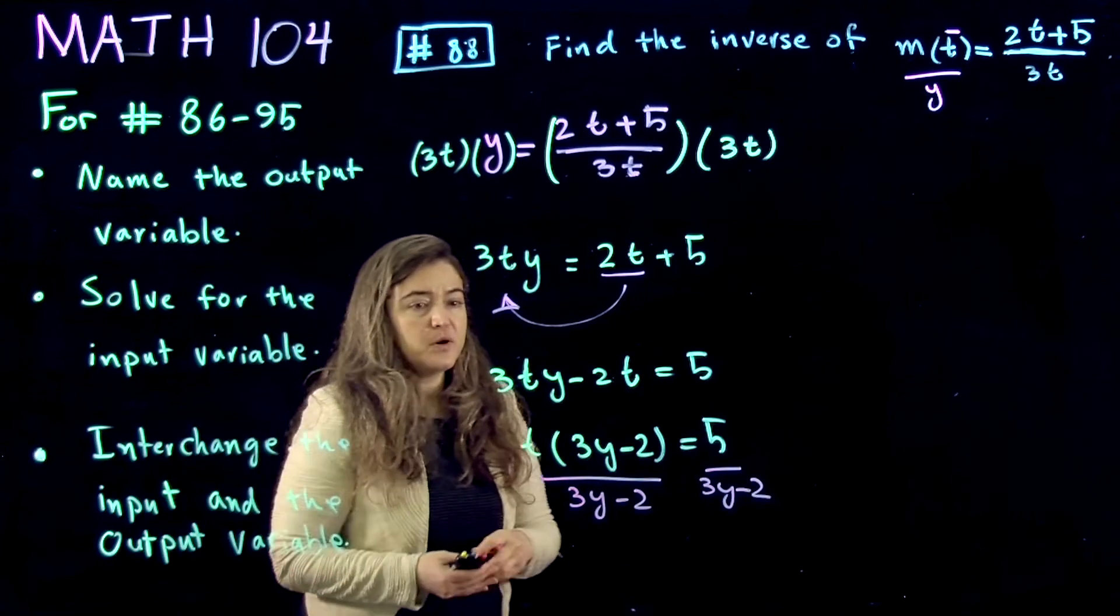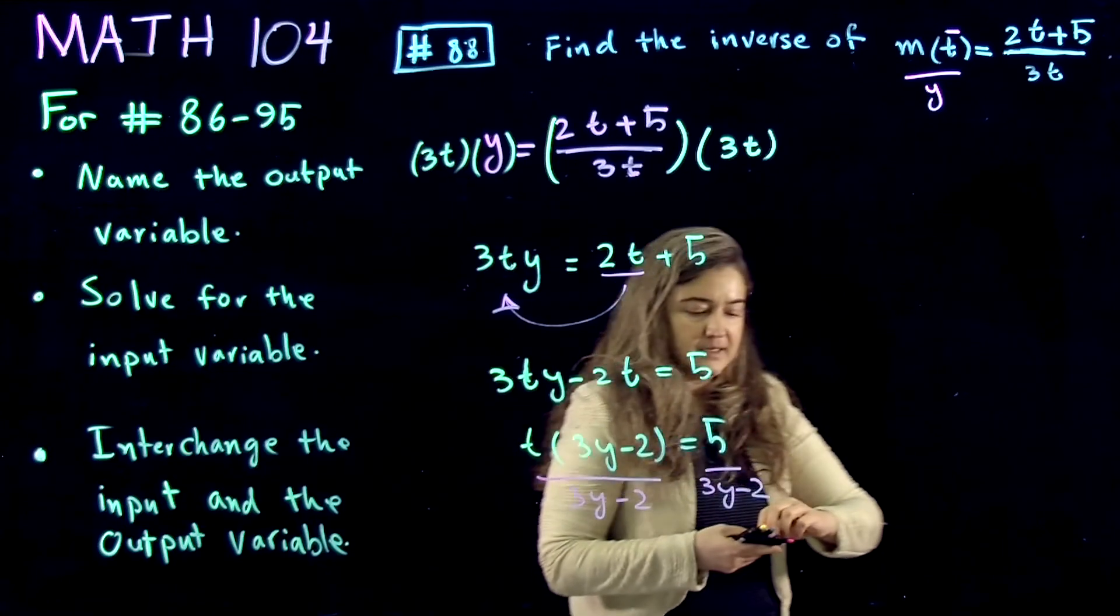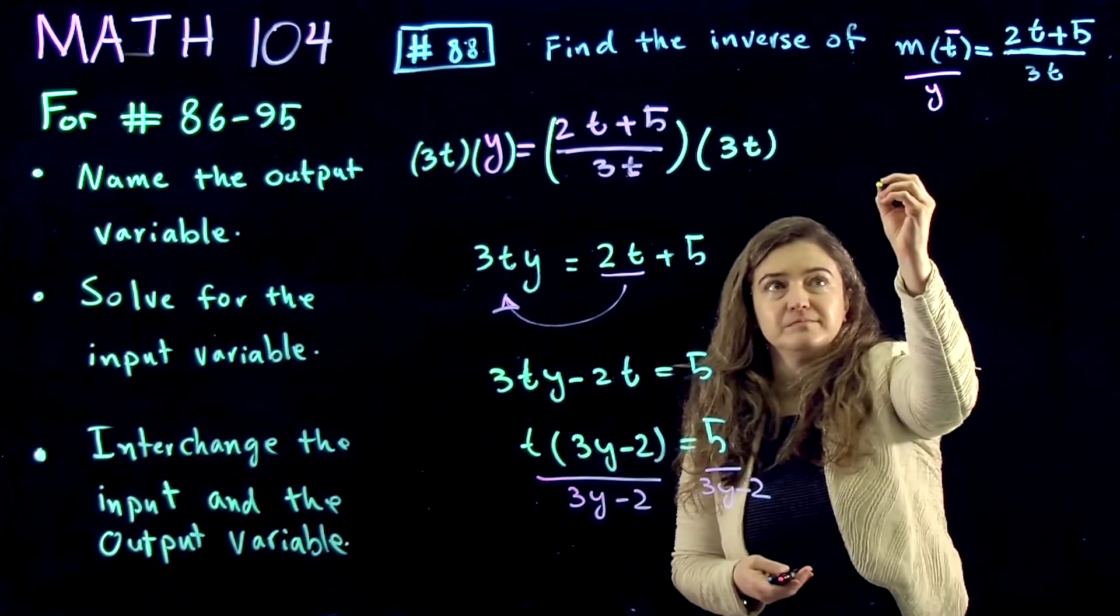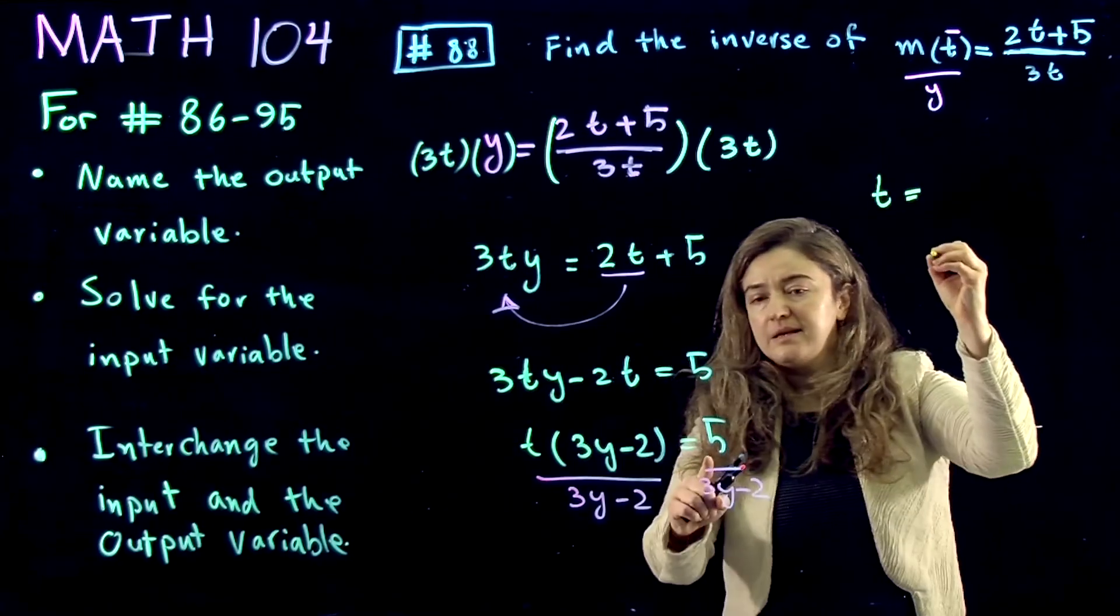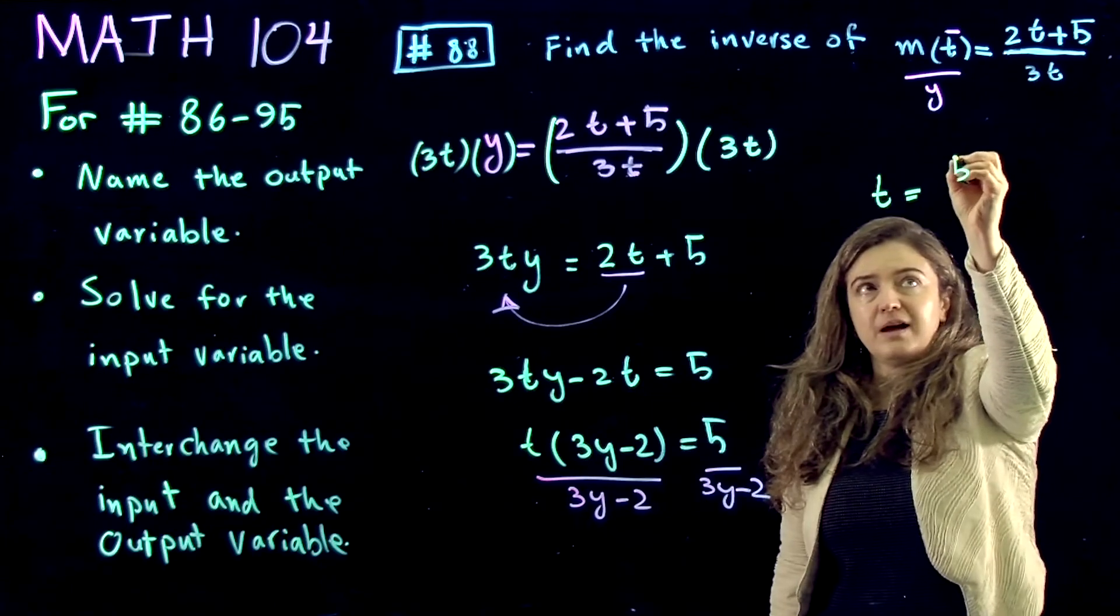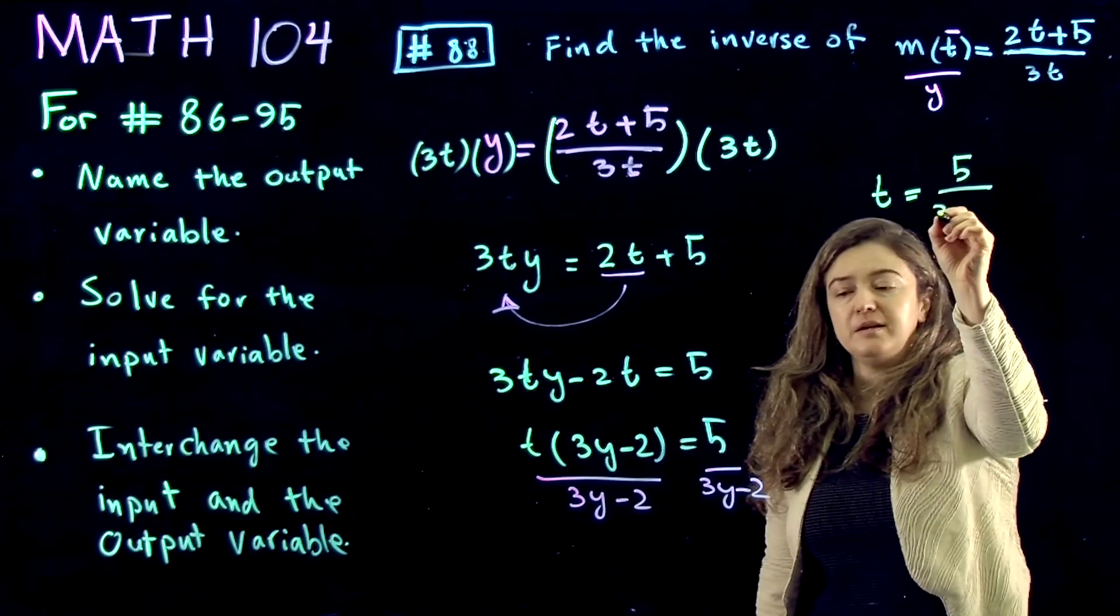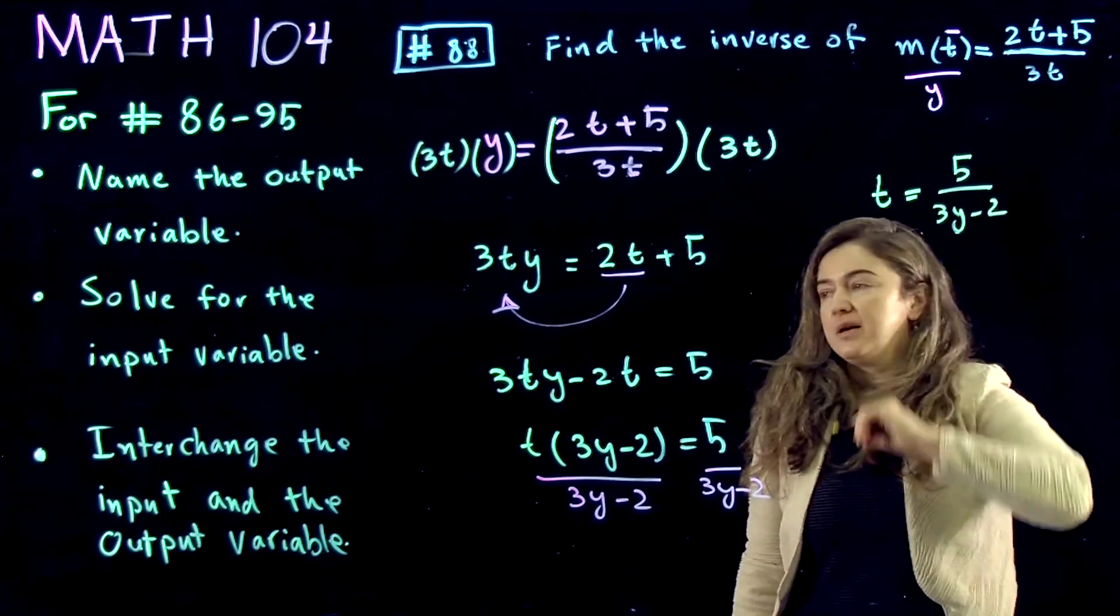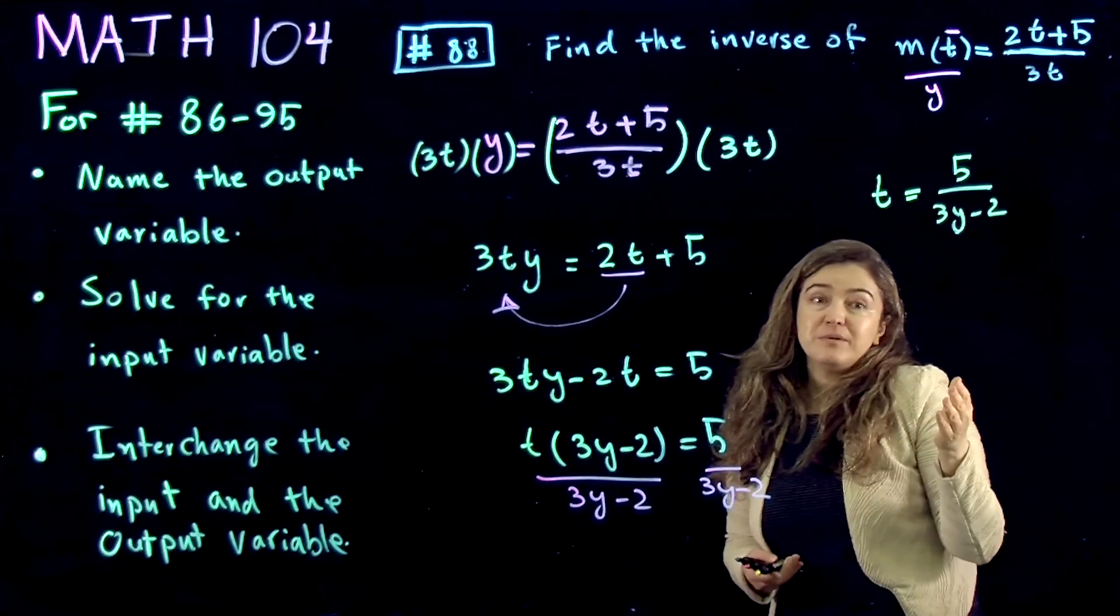And so what we get is t on this side. And on the other side, I get 5 divided by 3y minus 2. Now we've solved for t.